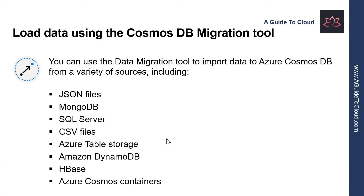You can use the Data Migration Tool or DMA to import data to Azure Cosmos DB from a variety of sources, including JSON, MongoDB, CSV files, Amazon DynamoDB, HBase, etc. The Data Migration Tool is available as a download from GitHub or any other repositories. The tool guides you through the process of migrating data into a Cosmos DB database; you are prompted for the source of the data and the destination. The tool can either populate an existing container or create a new one if the specified container doesn't already exist. Please note that you can also use the Data Migration Tool to export data from a Cosmos DB container to a JSON file, either held locally or in an Azure Blob storage.